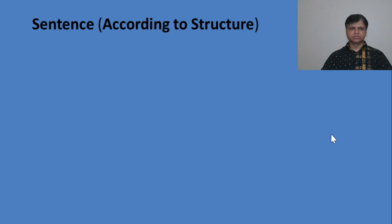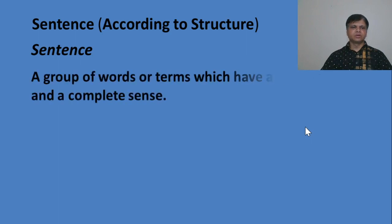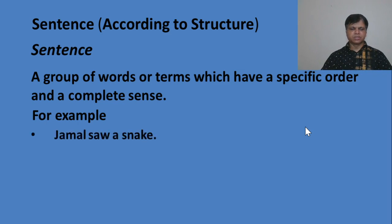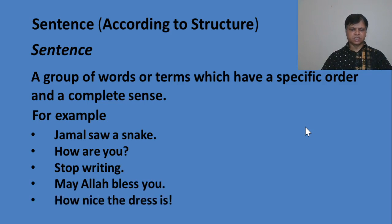First of all, we have to know what is a sentence. A group of words or terms which have a specific order and a complete sense is called a sentence. For example: 'Jamal saw a snake.' 'How are you?' 'Stop writing.' 'May Allah bless you.' 'How nice the dress is.' All these sentences have a specific order and a complete sense. So this type of arrangement of words or terms is called a sentence.